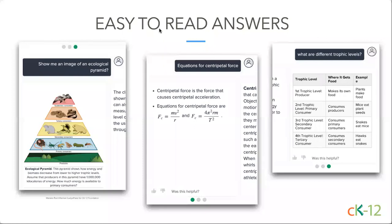We've updated from our first round of Flexi answers, which were all just quick text paragraph options. Now we try to get as much easy-to-read formatting as possible — so you'll see images, bullet points, formatted math text, and tables, really trying to make it as user-friendly and quick to get the answer as students are working their way through.